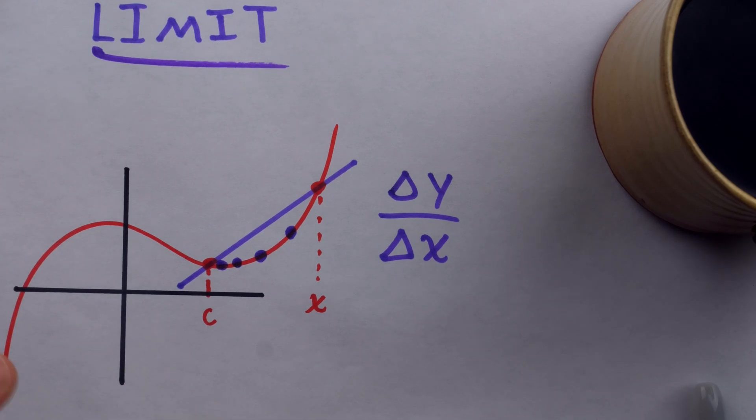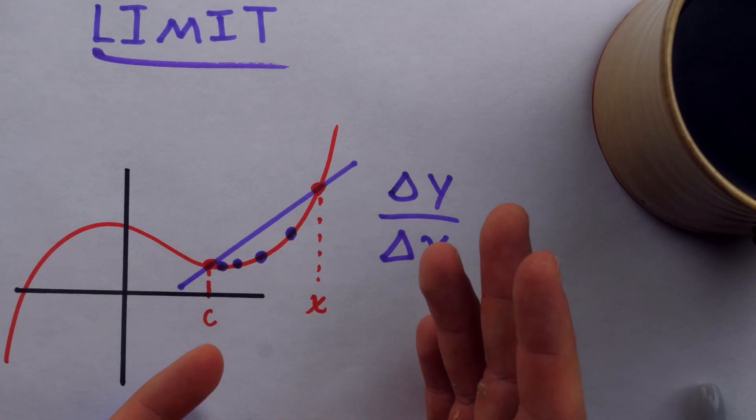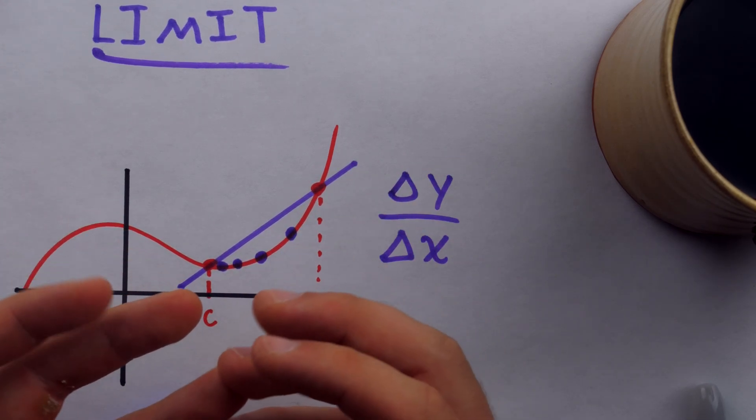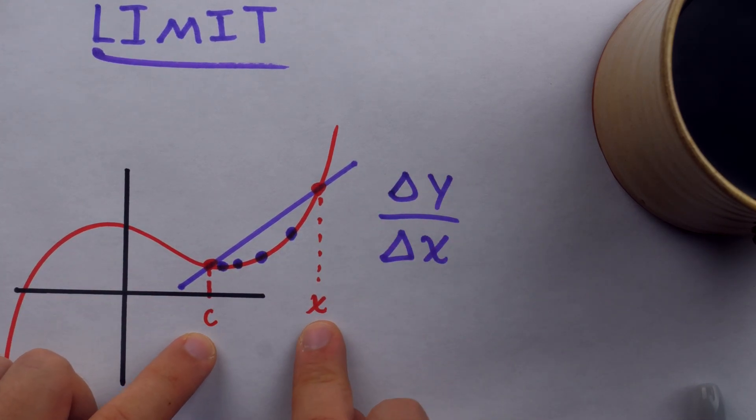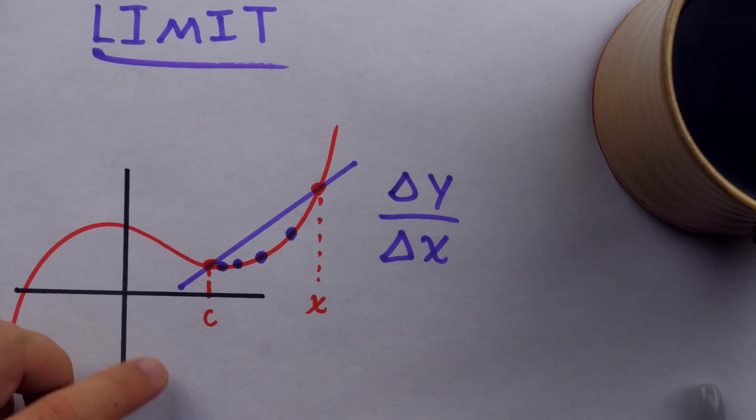And this is where our friend the limit comes in. Although I might not be able to do my familiar calculation for the average rate of change of a function if I put x directly on c, what I can do is ask if that value, that rate of change, approaches something in particular if we let x get infinitely close to c. Is there some limit there? Is there some value that's approached?